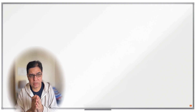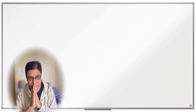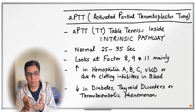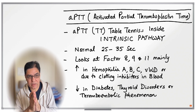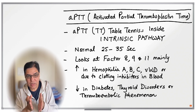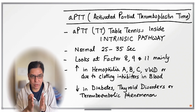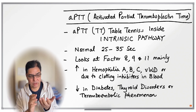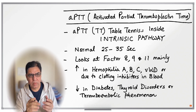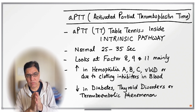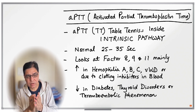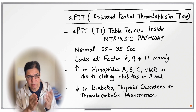The next test in the coagulation screen is APTT, which stands for activated partial thromboplastin time. The 'TT' in APTT also stands for 'table tennis,' and table tennis is played inside — or intrinsic. So APTT looks at the intrinsic pathway, specifically factors 8, 9, and 11. The normal APTT is between 25 to 35 seconds. It can be prolonged in deficiency of factors 8, 9, and 11, which are also called haemophilia A, B, and C respectively.